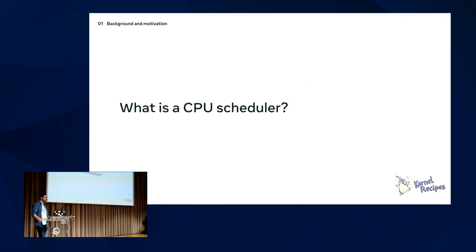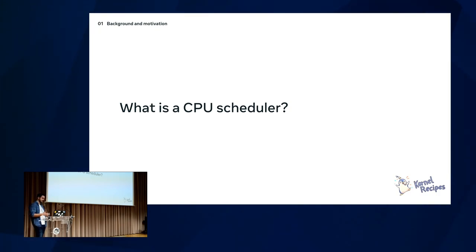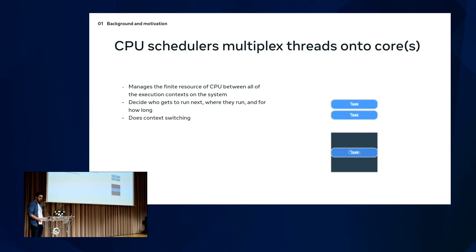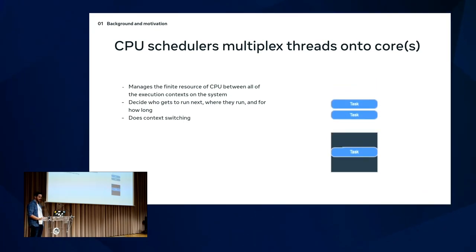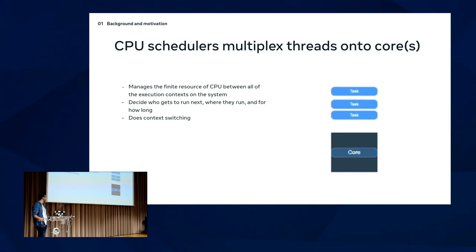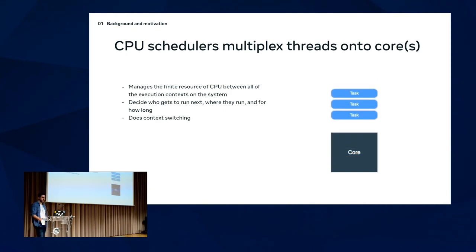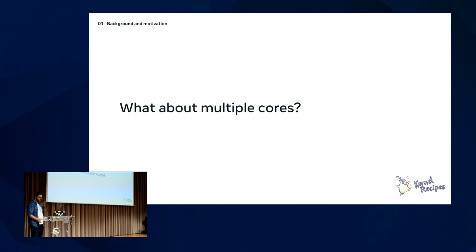What is a CPU scheduler? It's the component of the operating system that decides which task gets to run on which CPU, when, and for how long. It's straightforward: you have a finite number of cores but an arbitrary number of threads, and you need some component in the system to decide who gets to use that resource.